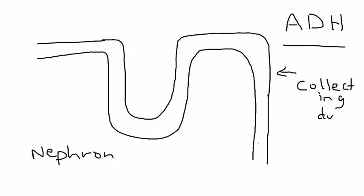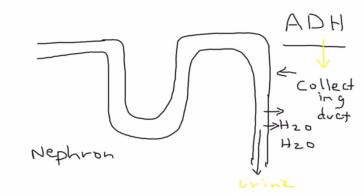The collecting duct is where the final determinations are made about what you excrete — which is, of course, your urine. ADH works on this collecting duct by bringing water back into your bloodstream. That is a fundamental role of ADH. When that happens, because water is coming back, the urine becomes more concentrated — less water is in the urine because it has gone back into the bloodstream.